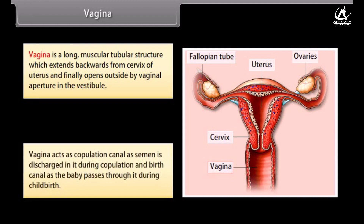The vagina acts as the copulation canal, as semen is discharged into it during copulation, and also as the birth canal, as the baby passes through it during childbirth.